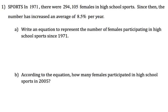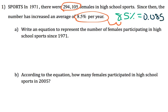In sports, in 1971, there were 294,105 females in high school sports. Since then, the number has increased an average of 8.5% per year. Just for starters, let's rewrite 8.5% here to the side equals 0.085 as a decimal.